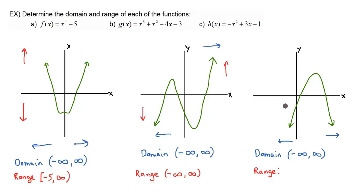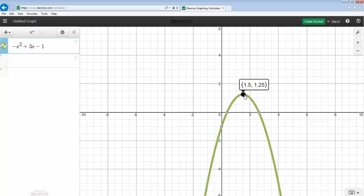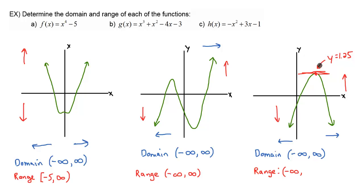Now the range is going to be a little trickier. We want to figure out our lowest y value. As we look downwards, it's pretty clear that the graph is going to continue going down forever — so that's negative infinity. But as we look to see how high the graph goes, it looks like we top off at a certain point. That's when I go back to Desmos. Here's the Desmos graph, and I move to the top of the parabola — the y value right here is 1.25. So the highest possible y value is 1.25, and we use a bracket there because we're including that number in our range.